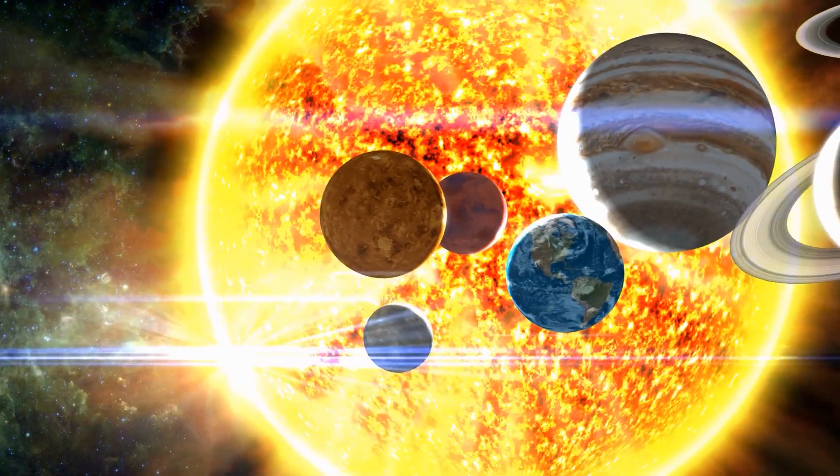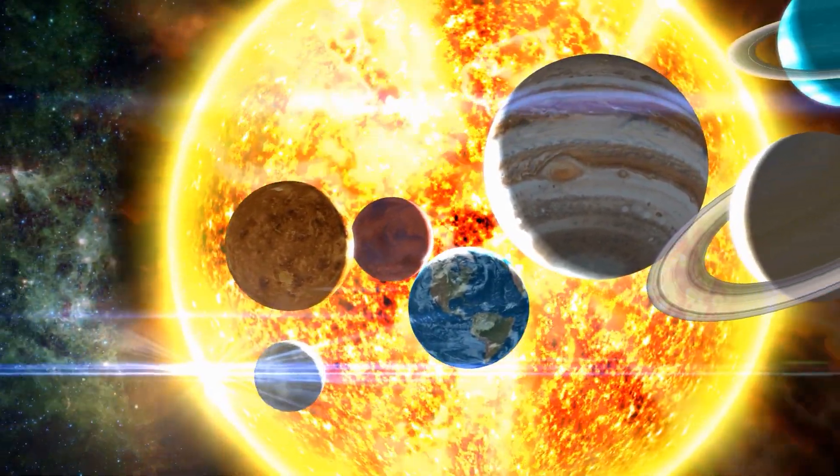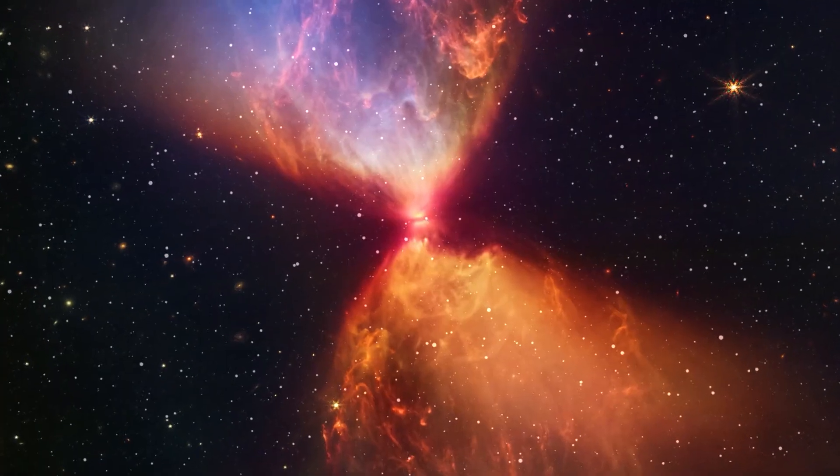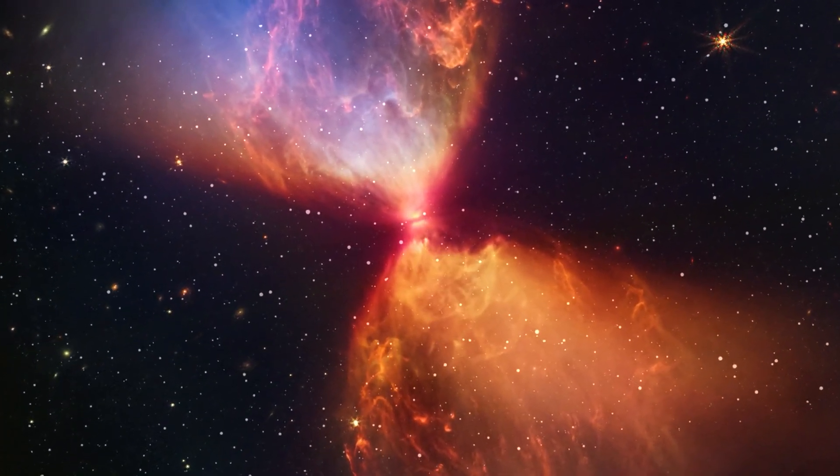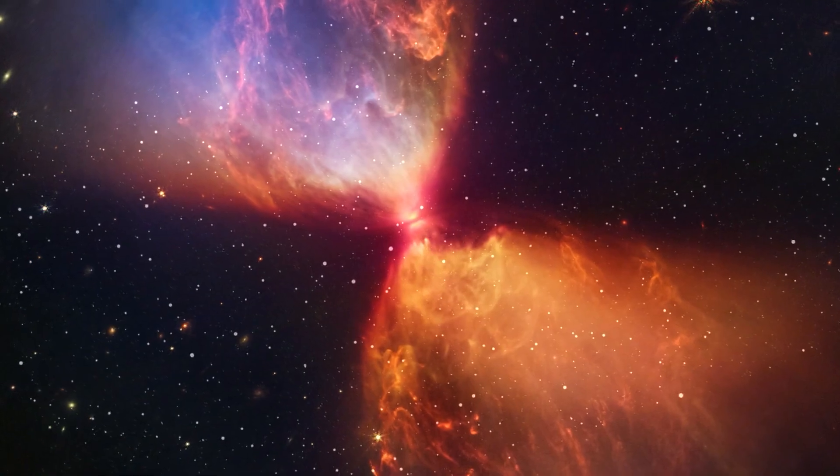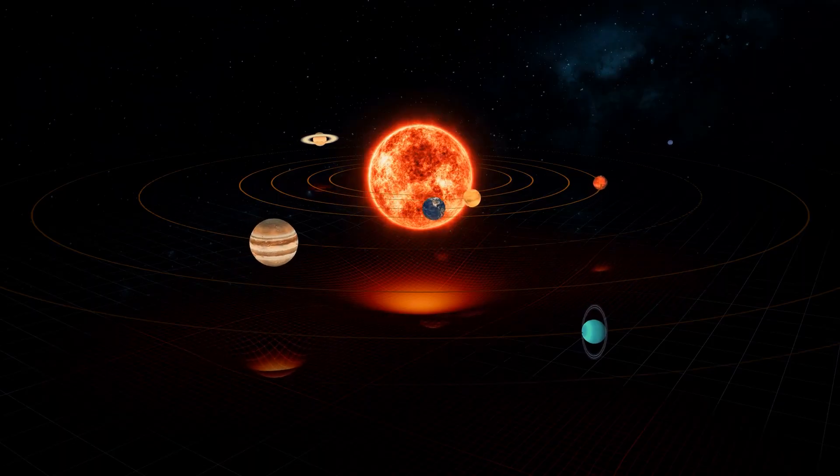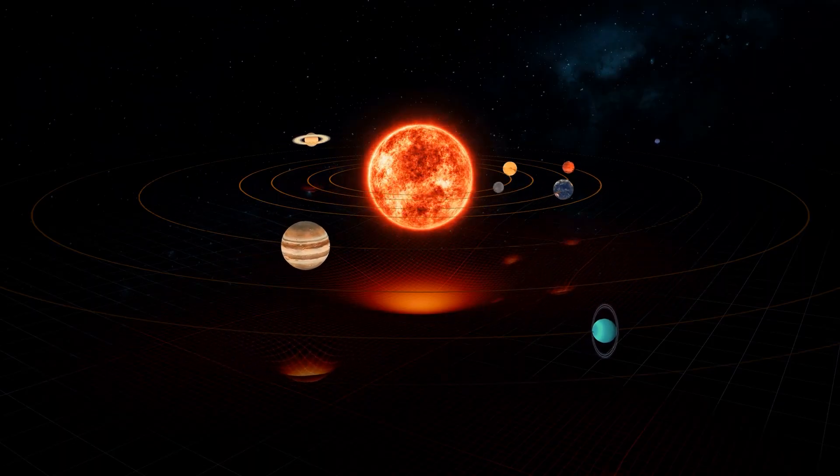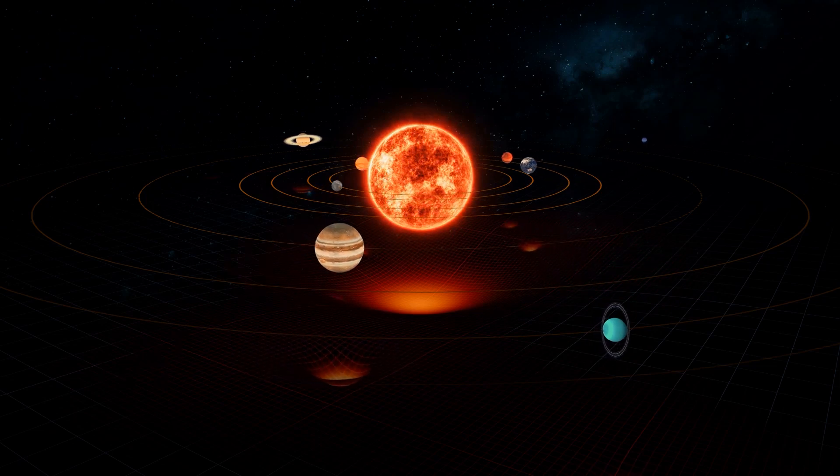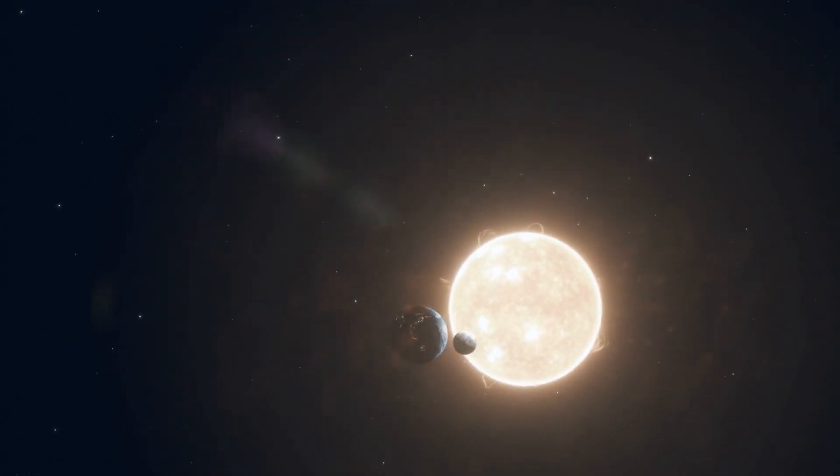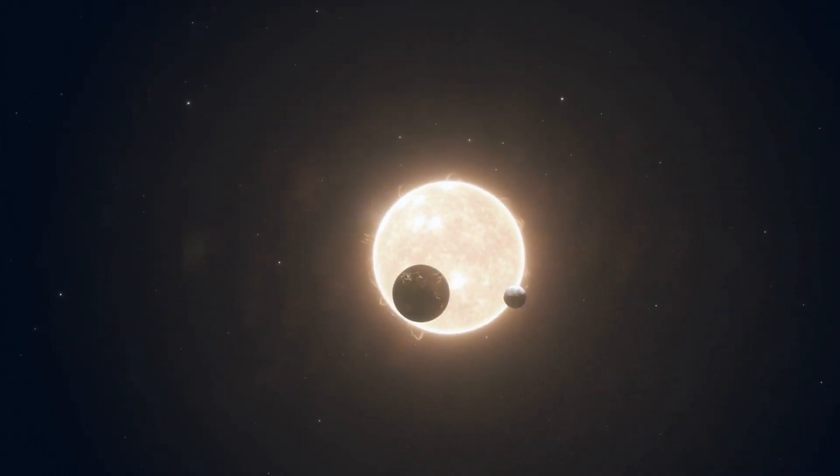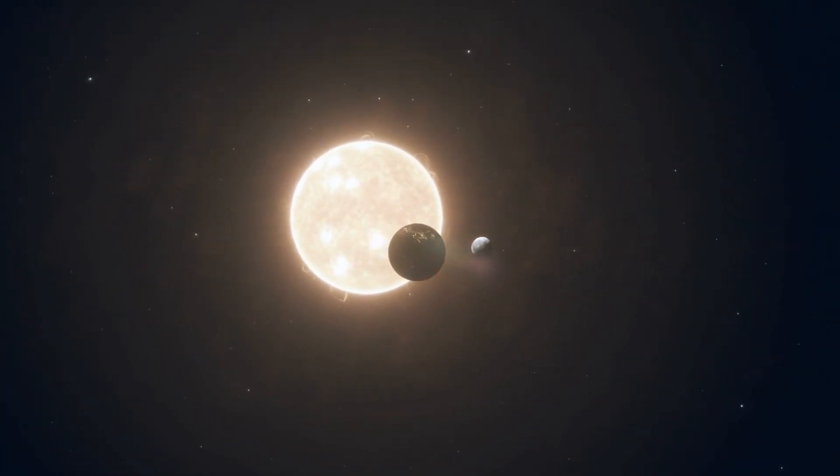Our solar system is traveling across interstellar space at a breakneck speed. It is neither stationary in the cosmos nor contained within a galaxy. Scientists aim to study fields, particles, and waves at the frontier of our solar system, but they also hope to learn more about the dynamics of the solar system's motion within the galaxy and the cosmos.